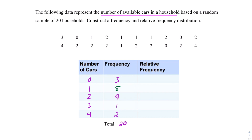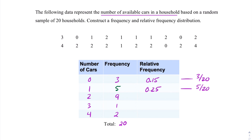Adding up those frequencies, we have a total of 20 households, which matches our sample size, confirming we didn't miss any data. For the relative frequency distribution, we take the frequency of each category and divide by the total. Zero cars: 3 divided by 20 = 0.15. One car: 5 over 20 = 0.25. Finishing out: 0.45, 0.05, and 0.10, completing our frequency and relative frequency distributions.